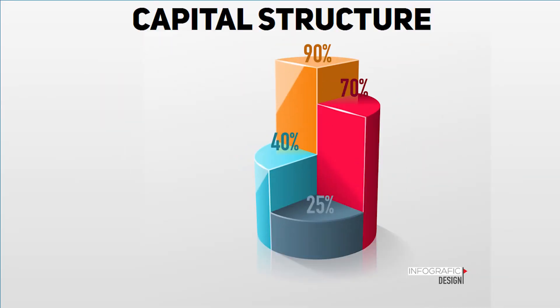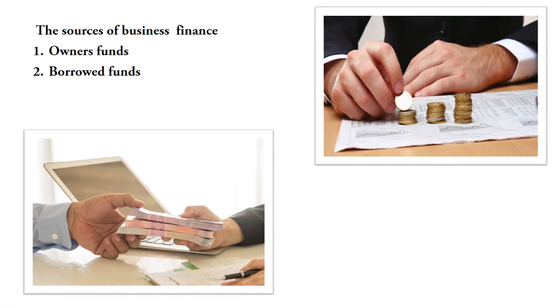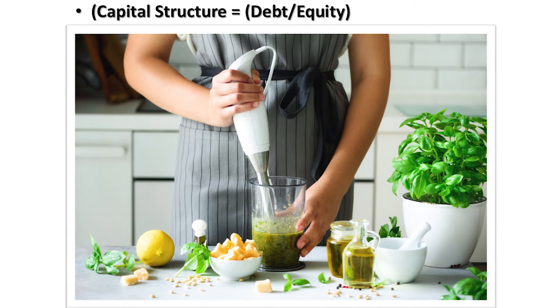Capital structure is a financial pattern or proportion of the business which acquires funds from different sources. When raising funds from various sources, businesses have a choice to choose from various proportions. In simple terms, capital structure is a mix between owner's fund and borrower's fund.